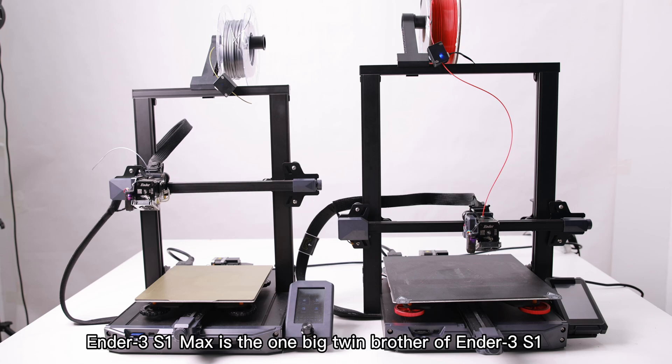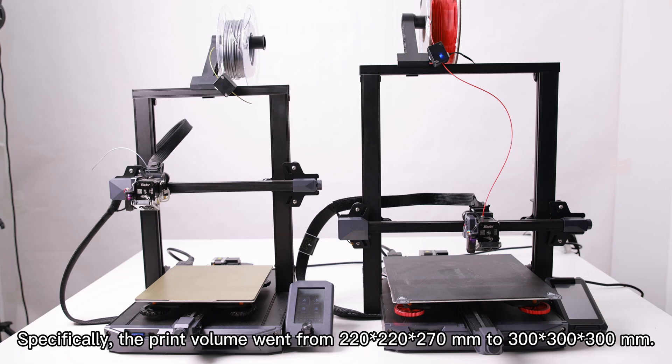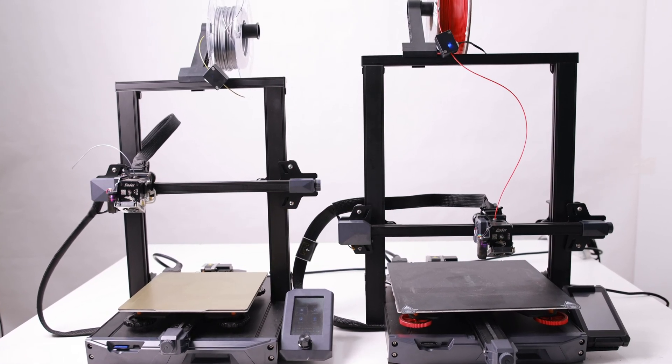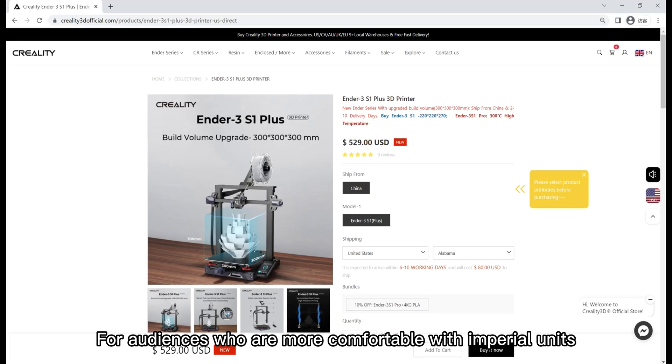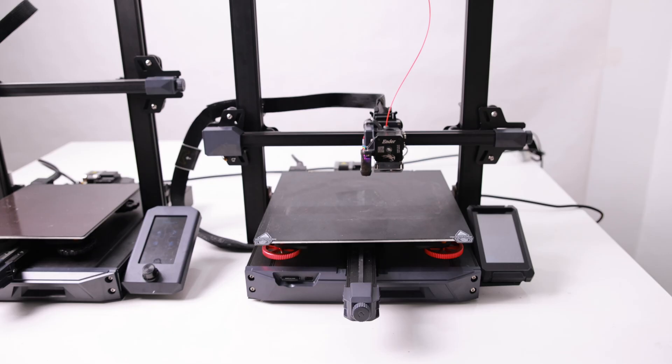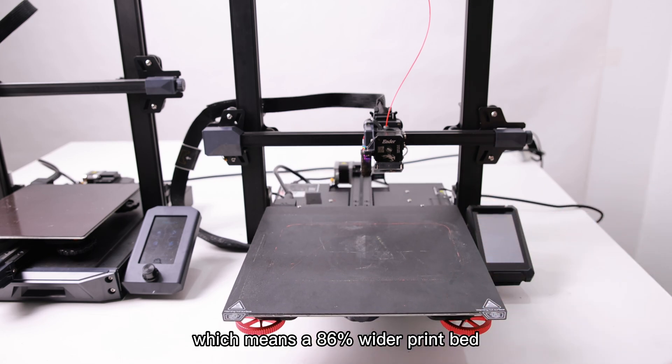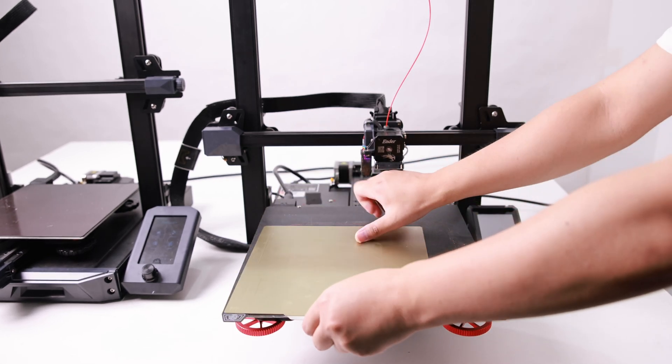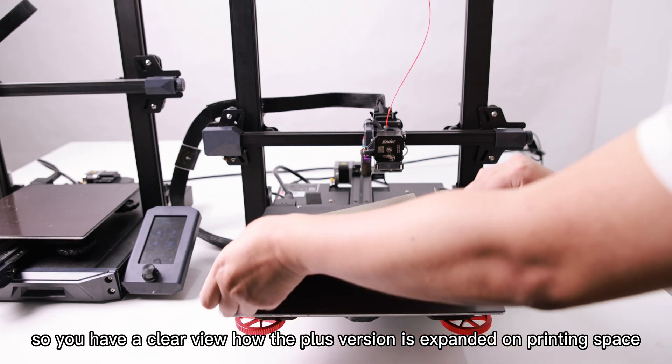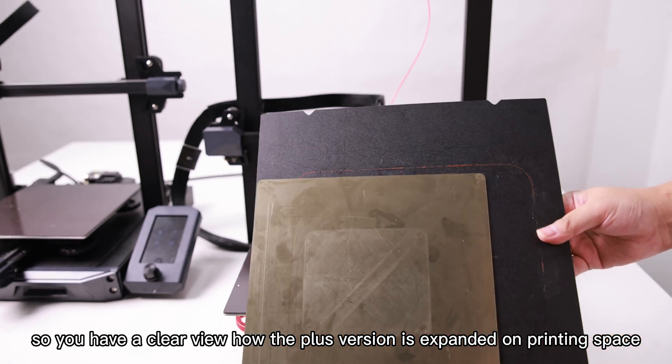Ender 3 S1 Max is the big twin brother of Ender 3 S1. Specifically, the print volume went from 220 by 220 to 300 by 300 millimeters. For audiences who are more comfortable with imperial units, that is 8.7 to 11.8 inches in X and Y axis, which means an 86% wider print bed. I put the Ender 3 S1 PEI sheet on the plus print bed so you have a clear view of how the plus version is expanded on printing space.